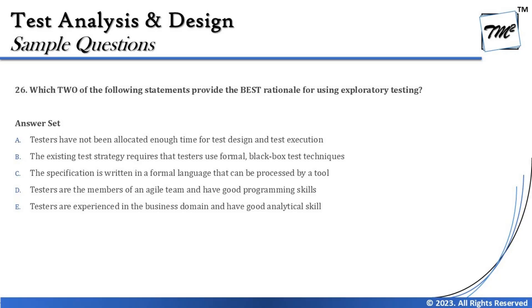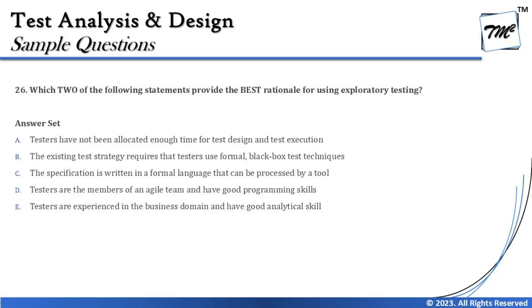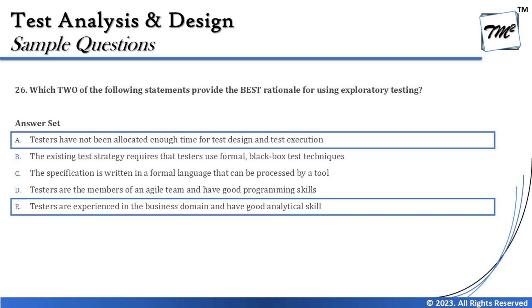Option E says testers are experienced in the business domain and have good analytical skills — that clearly supports exploratory testing, since it relies on past experience, domain knowledge, and knowledge of typical defects. So the right answers for question 26 are A and E: A because of time pressure on test design and execution, and E because testers' business domain experience and analytical skills are the very basis of exploratory testing. Judgment is very important and crucial in such questions.